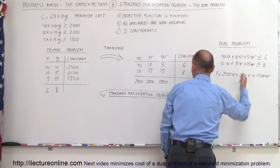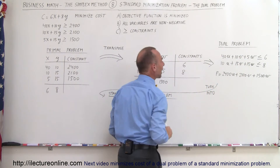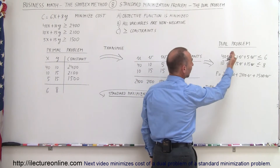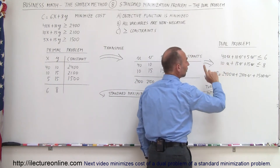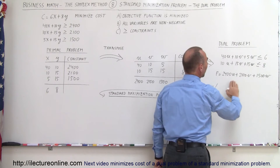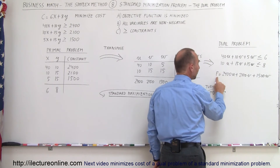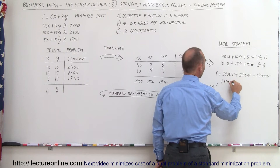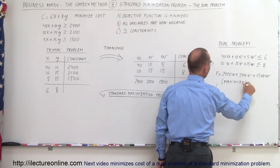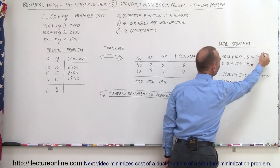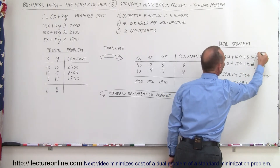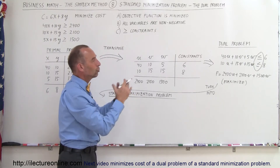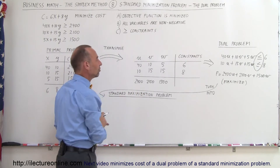We're going to turn that into our new standard maximization problem. Because if you ended up with something like this, you can see it's an obvious maximization problem. One, all the numbers are positive. Two, we have a profit function we're trying to maximize — because you maximize profit in order to minimize cost. And thirdly, the inequality symbols are less than or equal to — again, indicators that this is now the dual problem, which is a maximization problem.